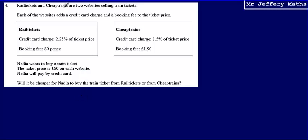This is question four. Here we're told that Rail Tickets and Cheap Trains are two websites selling train tickets, and it tells us that each of the websites adds a credit card charge, which we're given, and a booking fee to the ticket price.